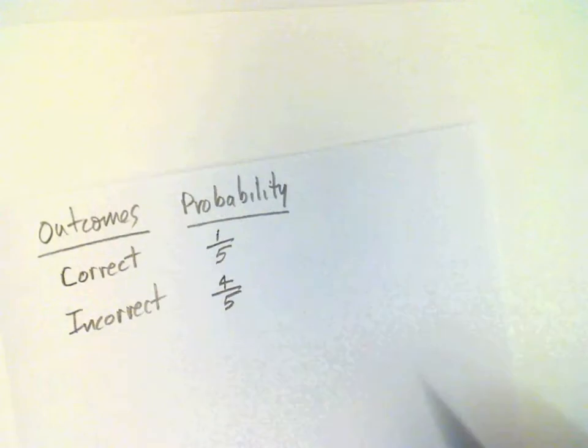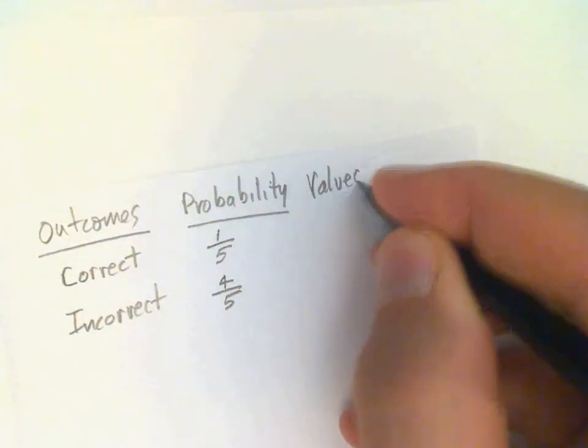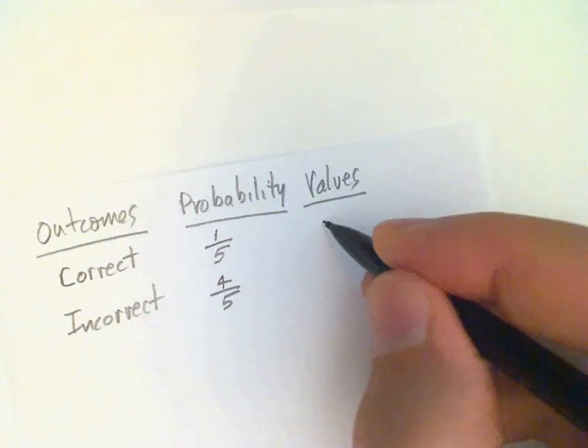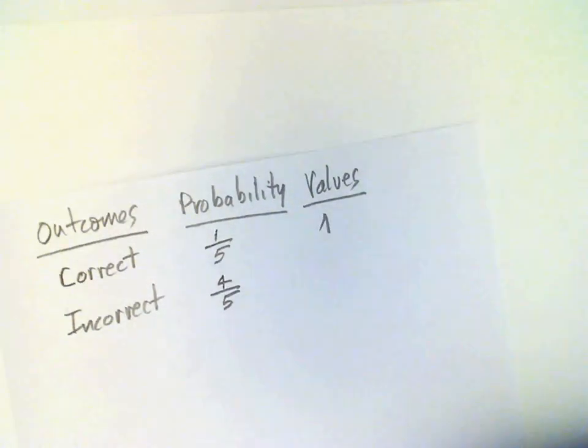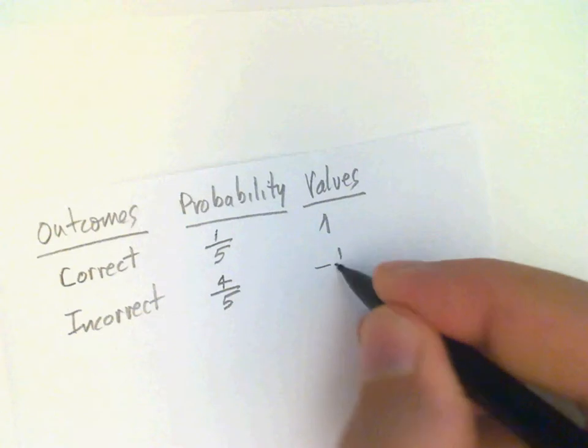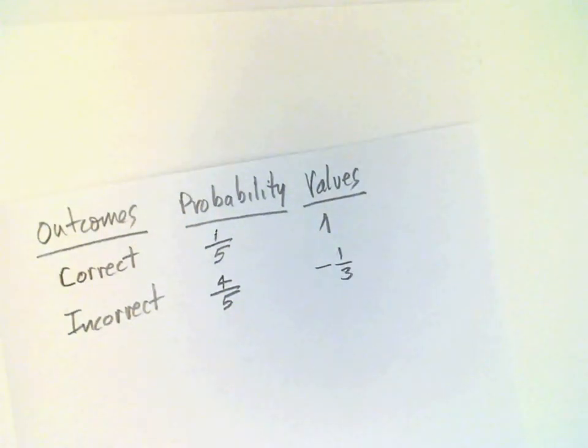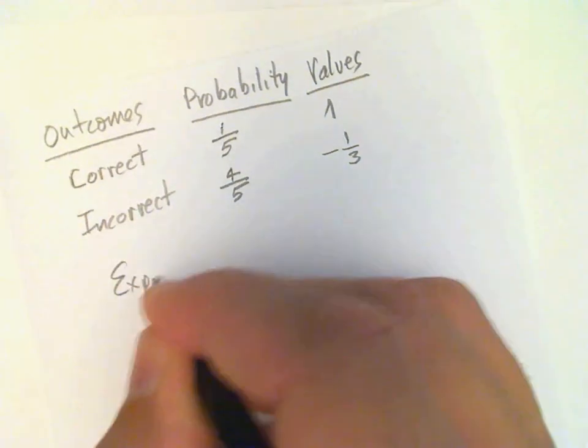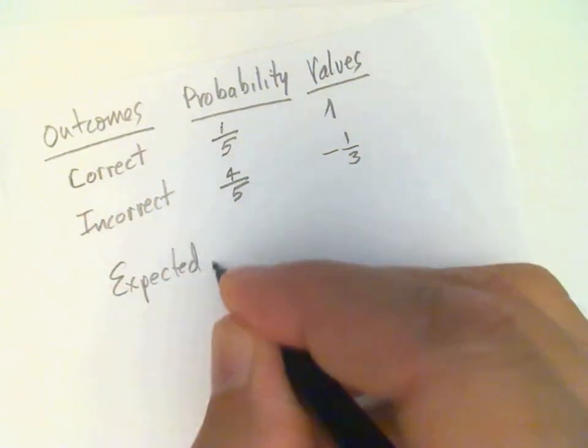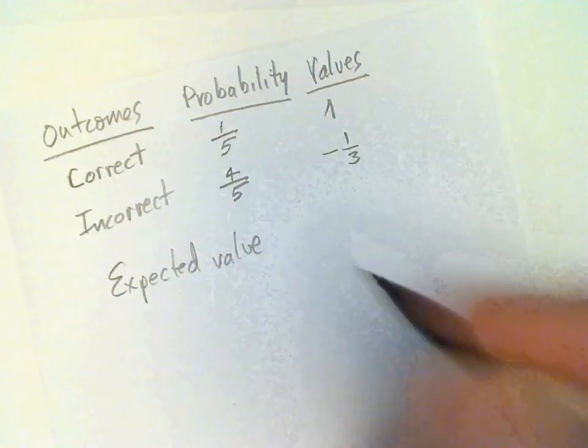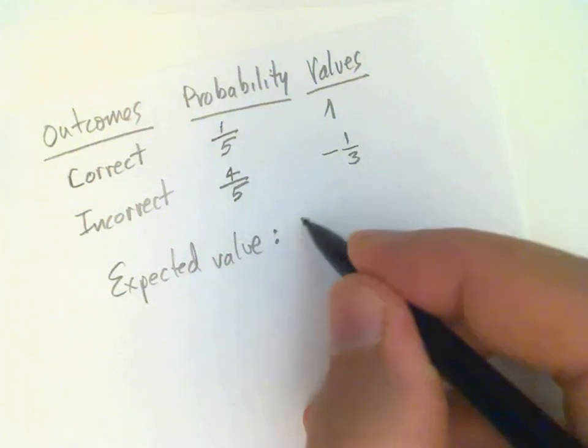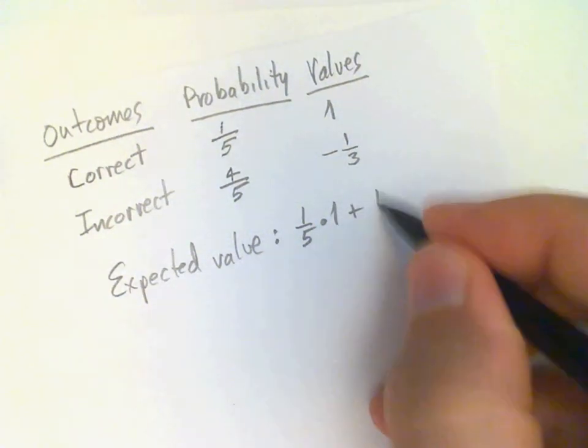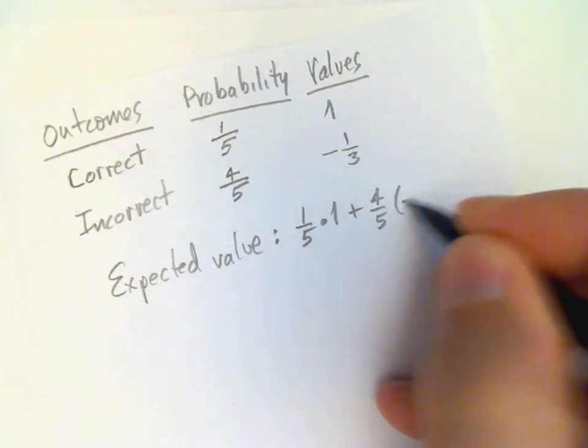The values associated with these outcomes are one point for the correct answer and negative one-third of a point for the incorrect answer. This means our expected value for randomly guessing is one-fifth times one plus four-fifths times negative one-third.